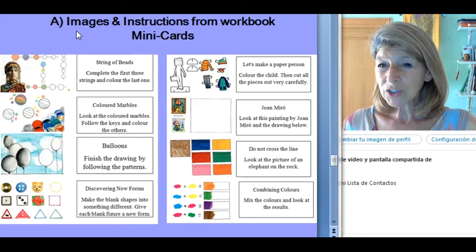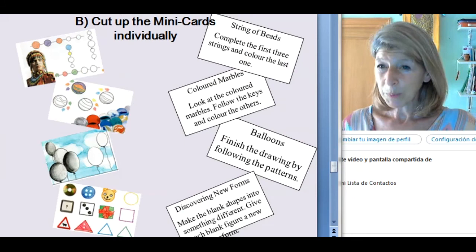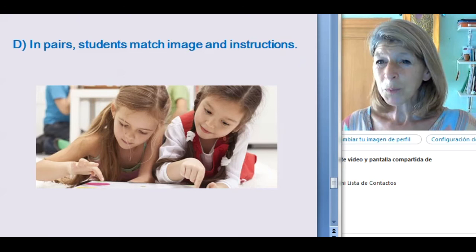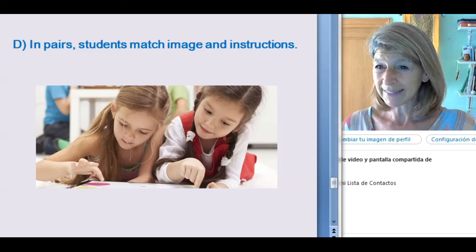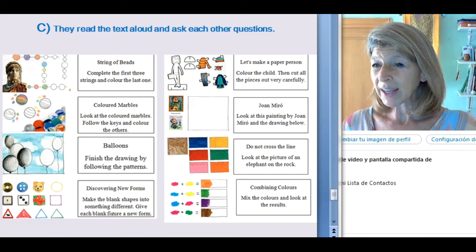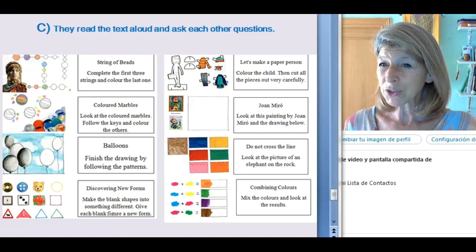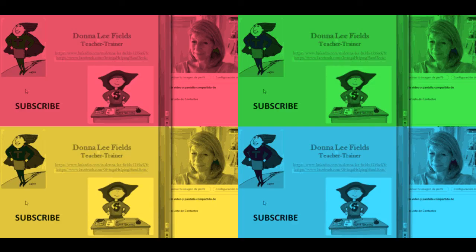So these are images and instructions from a whole unit in an art book. We put them on the mini cards, and then we cut them up, just as before. Once they're cut up, we give a set to each pair of students, and they work together to match the image and the instructions. When they have the images and the instructions matched up, you can ask them to read them aloud. Read aloud as often as possible so that the language goes deeper into their being.